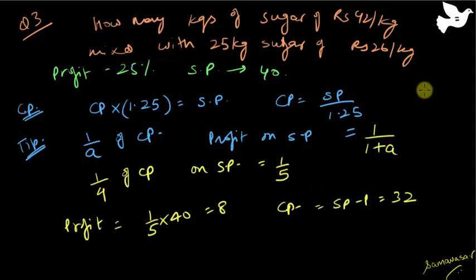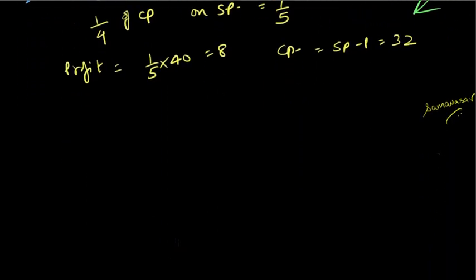So this is something which will help you calculate questions very very quickly in the exam, because otherwise I will have to do 40 divided by 1.25 and I need to solve this. It will take me more time. Instead of this I can just use this and I will get my CP fairly quickly.